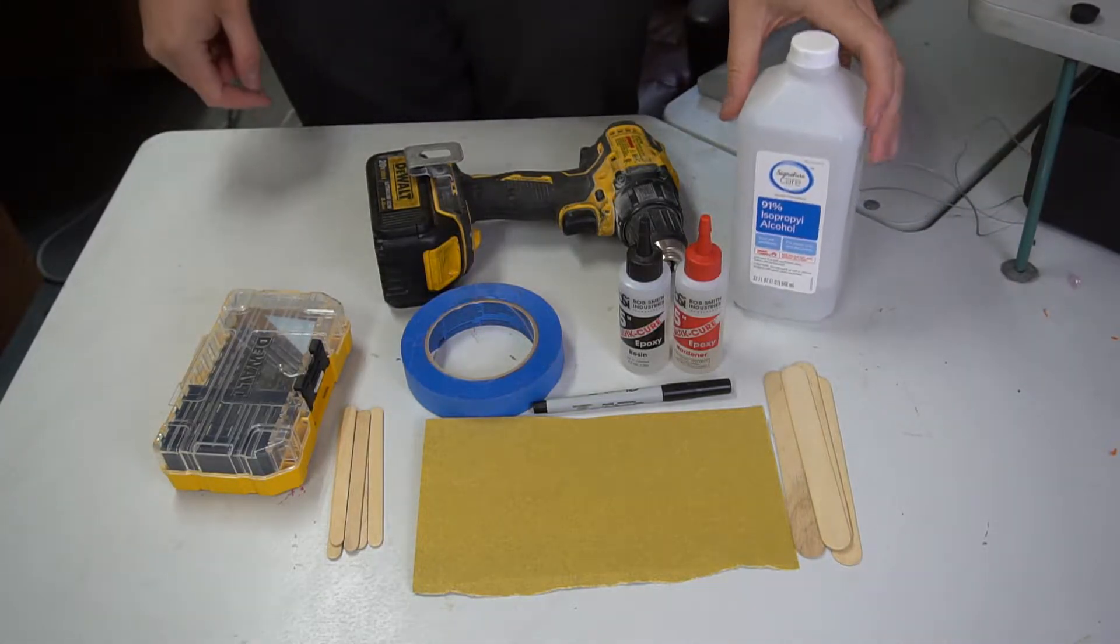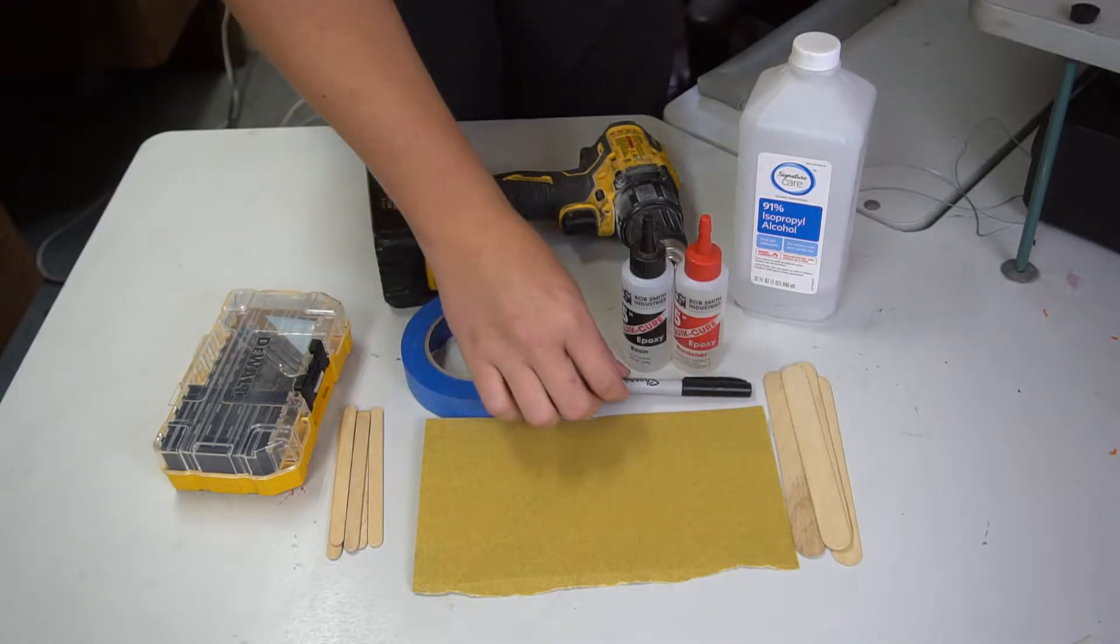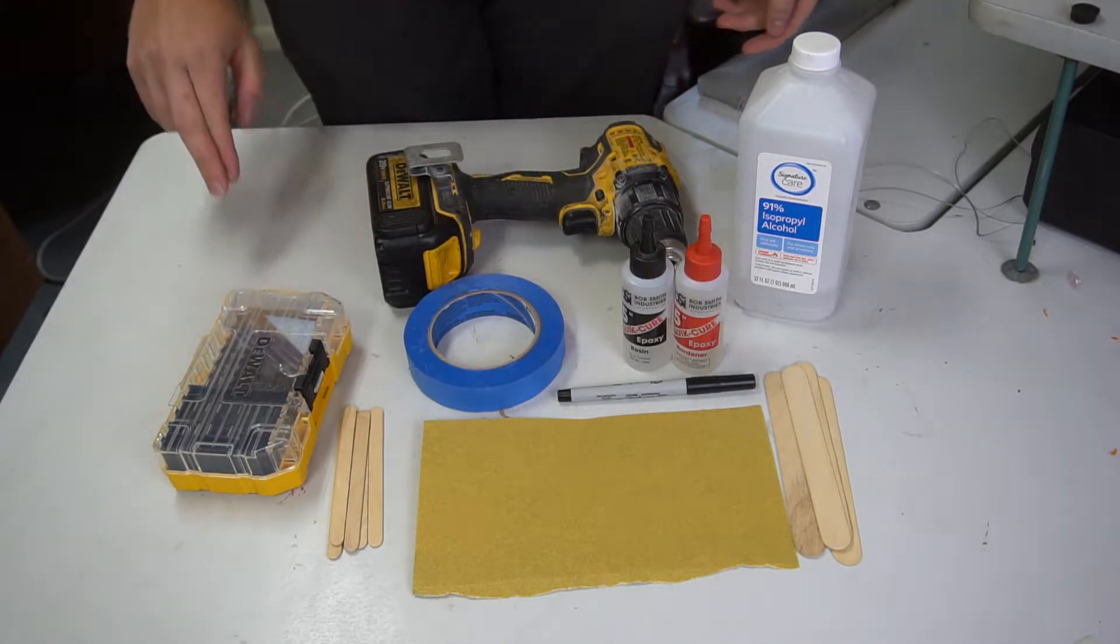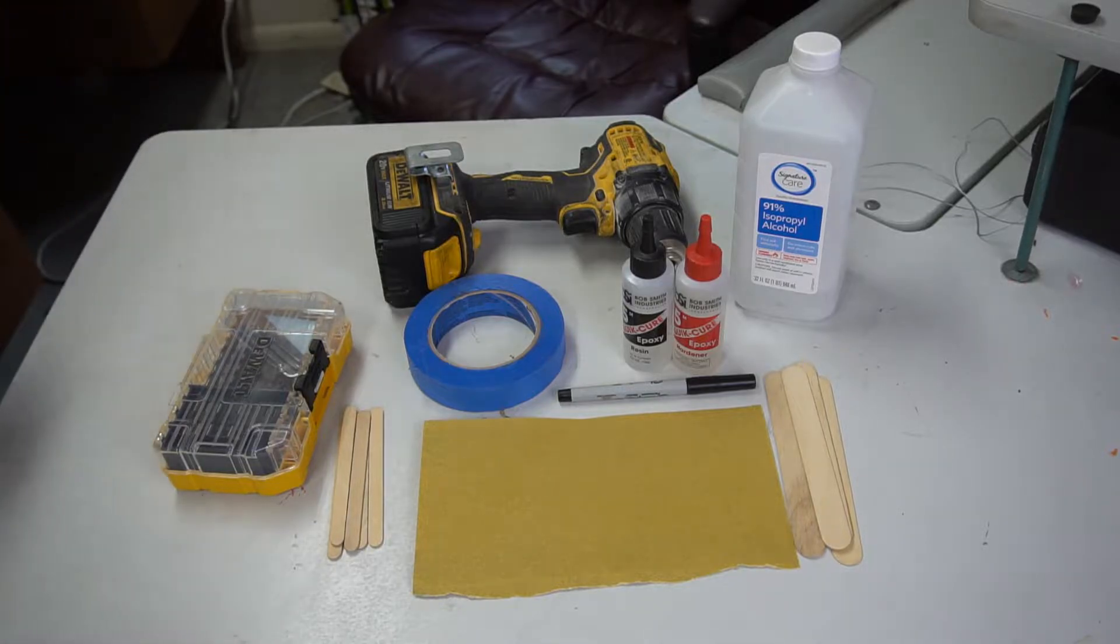Some rubbing alcohol to keep parts clean, as well as a marker or pencil to mark what you're measuring out. A roll of masking tape is going to come in handy as well. Finally, you'll need a drill and drill bits because we do have to put some holes in some things. And incidentally, that's where we're going to start.